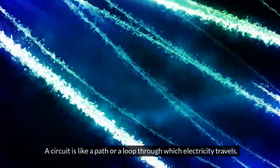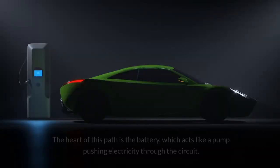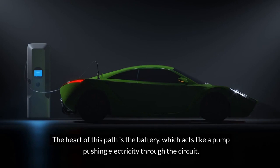A circuit is like a path or a loop through which electricity travels. The heart of this path is the battery, which acts like a pump, pushing electricity through the circuit.